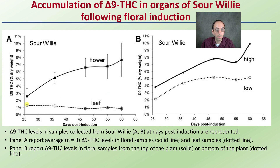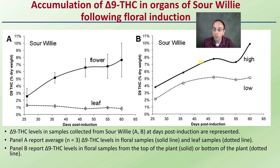What we're noticing overall is that the leaf stays pretty stable and doesn't really accumulate a whole lot. The flower does increase over time, but we can see that there's also some great variability. Looking at the higher portions of the plant versus the lower portions, it seems like the higher portions tend to accumulate a little bit more, especially towards the end — we're noticing a little bit of a pickup there.